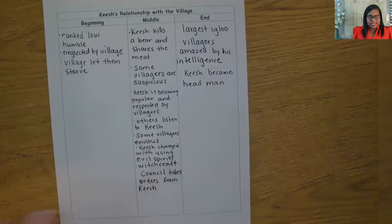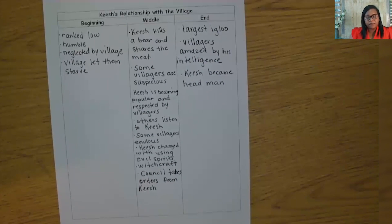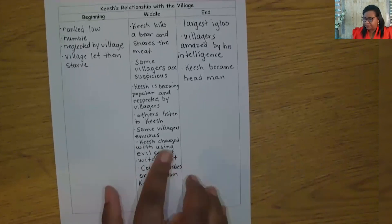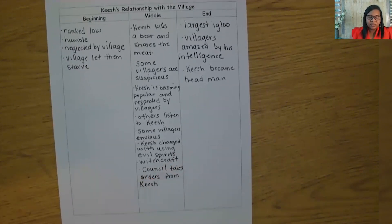Now let's review what we've collected today. You have learned how to describe a character's shifting relationship with others by tracking changes in key events across the story. Our mission was to think about how Quiche's relationship changed with the village over the course of the story. We thought about how Quiche, in the beginning of the story, was being neglected by the villagers. Then we captured how Quiche's killing of the bear changed things for him — he earned respect, but some villagers were still suspicious. And finally, we saw the change in relationship: Quiche was respected for his intelligence and became the lead man. Looking at the relationships in the text in this way helps us to think deeply about the interactions of the characters.